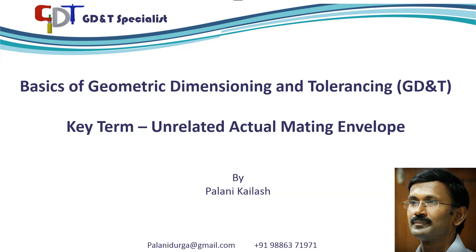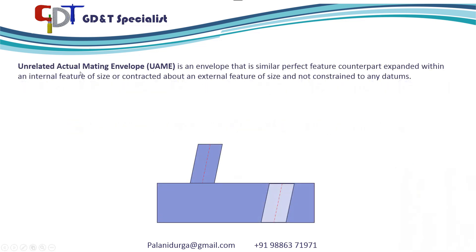Hi friends, this is Balnik. In this video we will learn what an unrelated actual mating envelope is. An unrelated actual mating envelope is an envelope that is a similar perfect feature counterpart expanded within an internal feature of size, or contracted about an external feature of size, and not constrained to any datums.